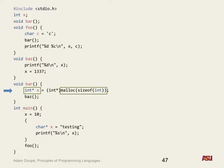So we have the heap allocation with malloc and the regular stack allocation with the variable X. When we leave scope, the int star X on the stack is automatically deallocated, but the malloc'd memory remains — we never call free on it. So this memory is always going to be there, and we'll look at what errors that causes.